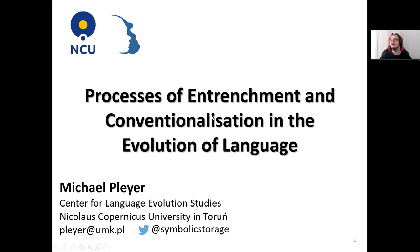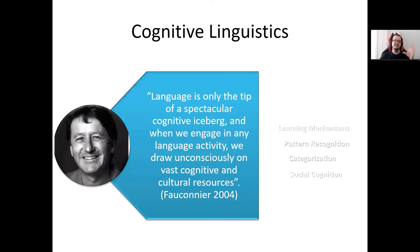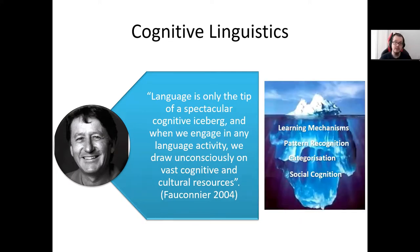Welcome and hi everyone from Poland. This talk takes a cognitive linguistic and usage-based approach to the evolution of language and asks from a theoretical perspective what that looks like. The first starting point is cognitive linguistics, captured in a quote from Jean Fauconnier: language is only the tip of a spectacular iceberg. When we engage in any language activity we draw unconsciously on vast cognitive and cultural resources. As cognitive linguists we're interested in the things under the surface — cognitive mechanisms like learning mechanisms, pattern recognition, characterization, and social cognition.